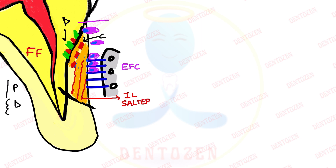The incremental lines of cementum are called incremental lines of Salter — another exam question. This first part of cementum, formed from the cervical margin to the apical two-thirds, is the only type of cementum present in single-rooted teeth — that is, incisors and canines. They do not have any other type of cementum. Its main role is anchorage — attachment of the tooth.